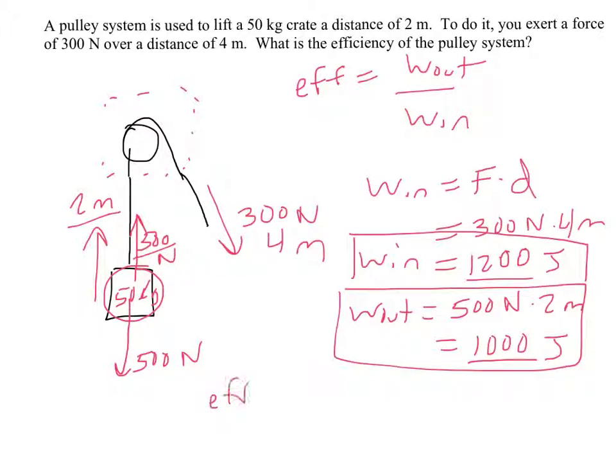But anyway, the efficiency then is going to be 1,000 over 1,200, and that will give us the decimal answer. And the decimal answer ends up being 0.833, which, if we convert to a percentage, is 83.3%.